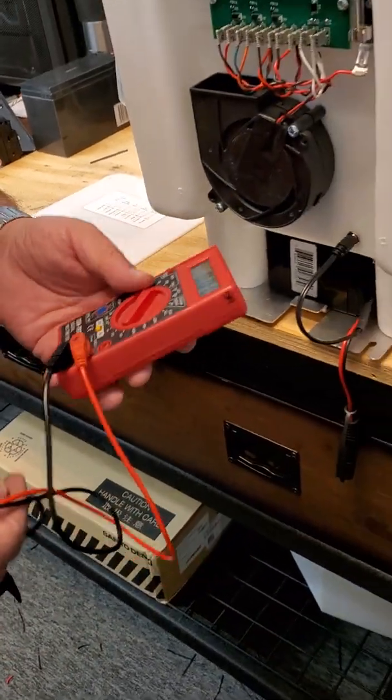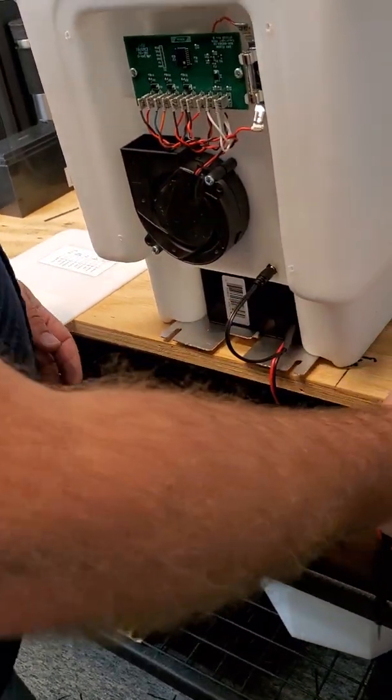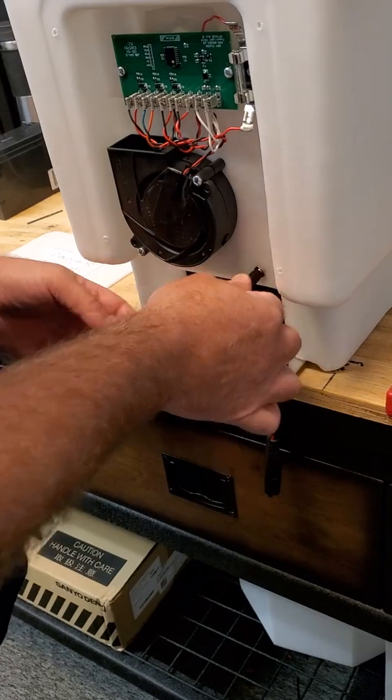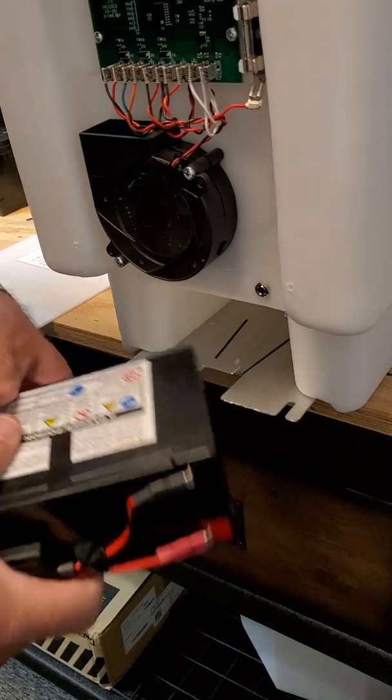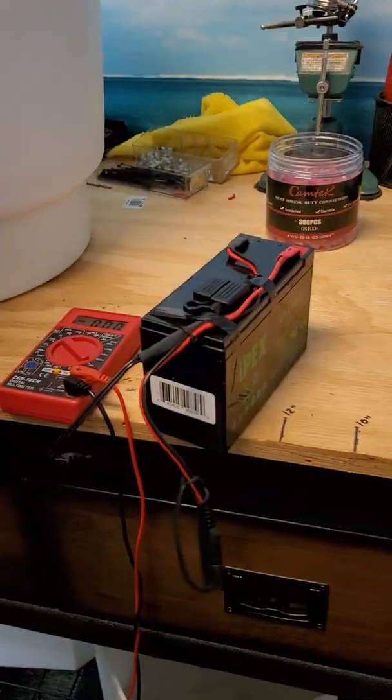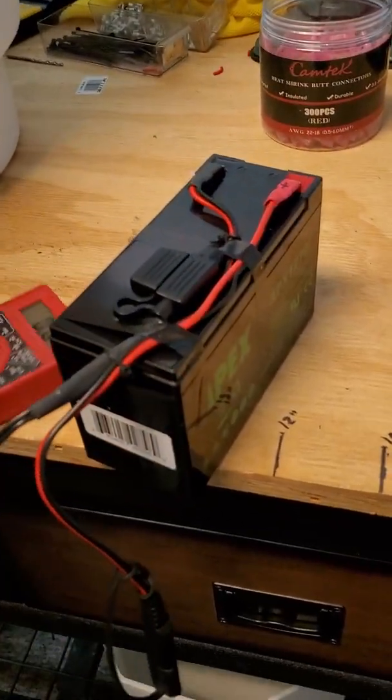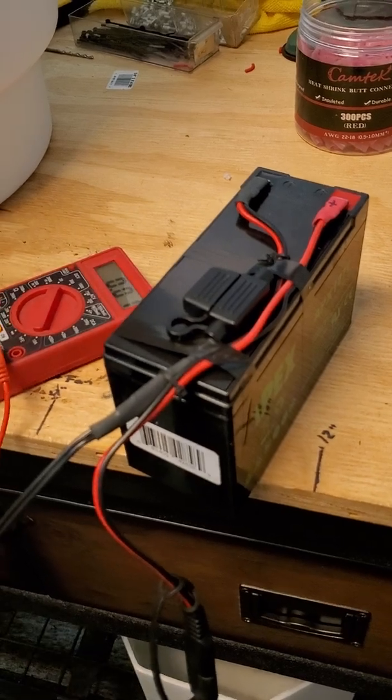What we're going to do here to start is unplug the toilet, remove the battery from the compartment, and start off by checking the voltage on the battery.